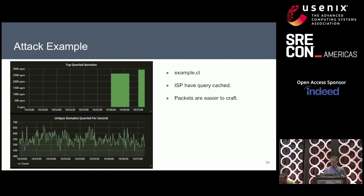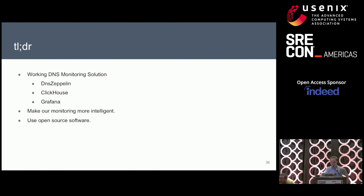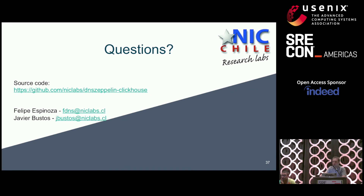As a TL;DR: we have a working DNS monitoring solution using DNSSampling, ClickHouse, and Grafana. We're looking to make the DNS monitoring more intelligent using machine learning or similar approaches. We also recommend using more open source solutions and contributing back, because everyone wins when monitoring improves. Try using ClickHouse for monitoring — it's very good at storing information with many columns. The source code for the monitoring system is available. Thank you. Any questions?